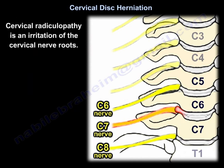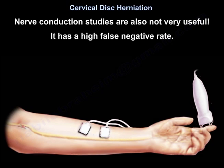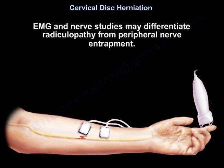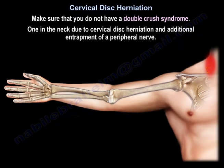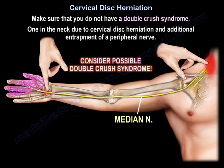Cervical radiculopathy is an irritation of the cervical nerve roots. In cervical disc problems, be aware of false positive MRIs, especially if the patient is above the age of 40. Nerve conduction studies are also not very useful, as they have a high false-negative rate. EMG and nerve studies may help differentiate radiculopathy from peripheral nerve entrapment. The patient may also complain of occipital headache. Make sure you don't have a double crush syndrome — one in the neck from cervical disc herniation and an additional entrapment of a peripheral nerve.